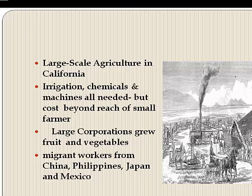Western farmers' futures were bound up with agricultural irrigation, chemicals, and machines — all requiring capital investments beyond the means of most small farmers. Especially in California this was evident, where huge fruit and vegetable farms owned by large corporations were worked by migrant workers from China, the Philippines, Japan, and Mexico, who never expected to own their own land.